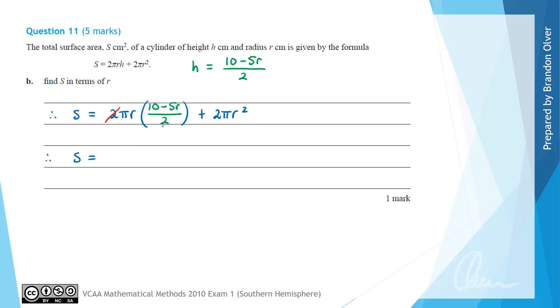And this 2 and this 2 can cancel which gives πr times (10 take 5r). Expanding that out we get 10πr minus 5πr² plus 2πr². So finally our expression for S is going to equal 10πr and then our next 2 terms are like terms so they'll combine to give minus 3πr². So that is the answer to part B for this question.